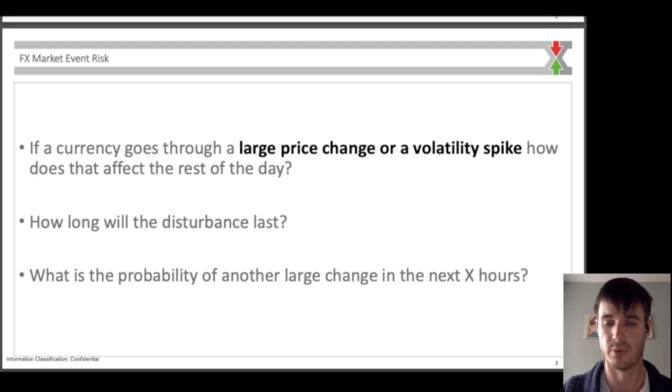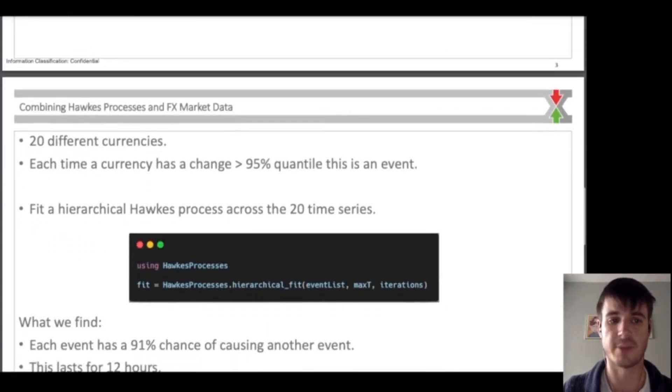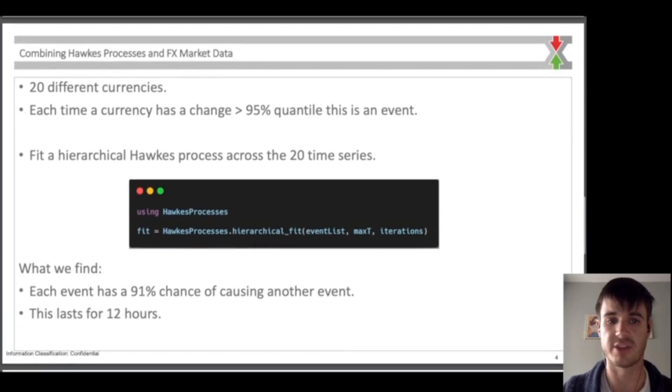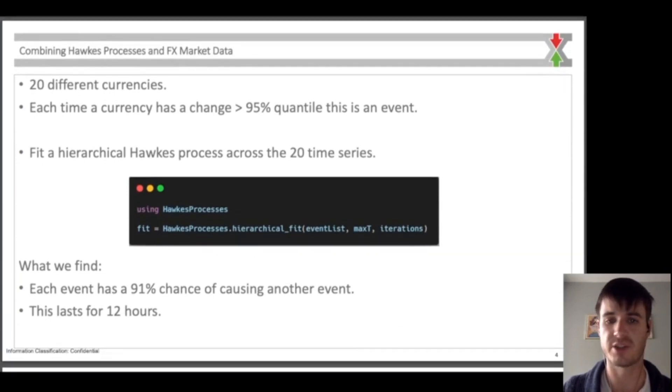To fit this model, we use 20 different currencies. Each time a currency goes through a change greater than the 95th percentile, this counts as an event. We then fit a hierarchical Hawkes process across the 20 time series to derive single parameters describing all events.